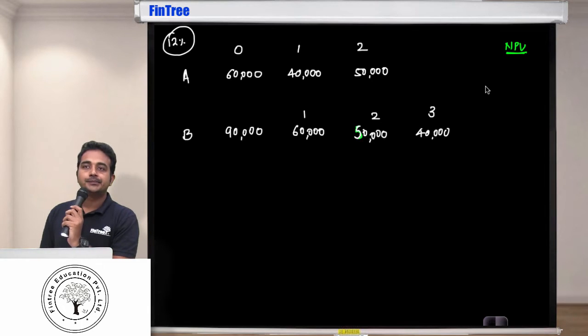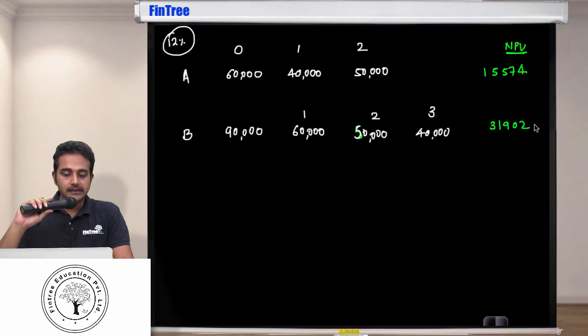Yes, tell me how much for A. 15,574. And for B? 31,902.